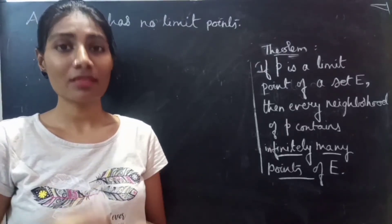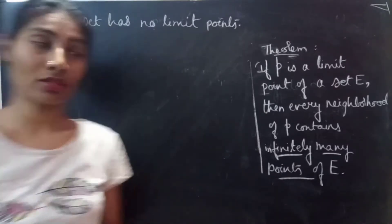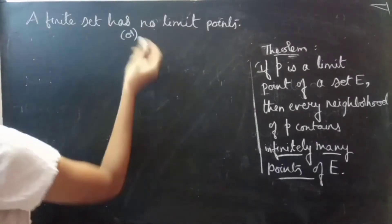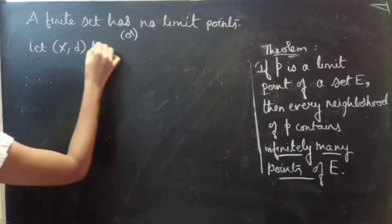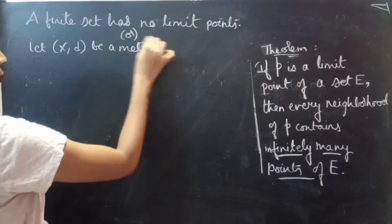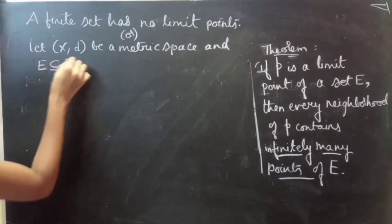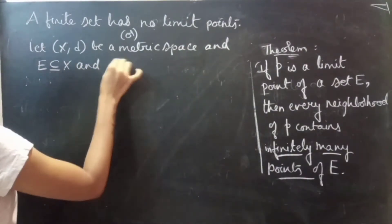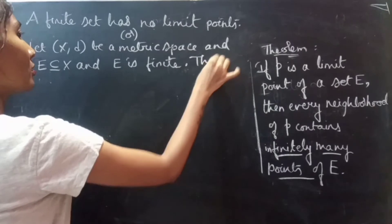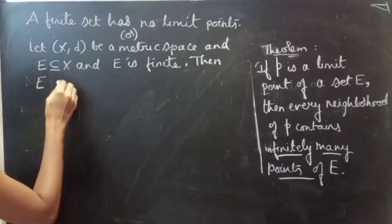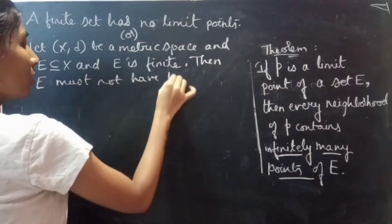Hello everyone, this is your company. In this video we are going to prove an important statement: a finite set has no limit points. The statement can also be written as: let (X, d) be a metric space and E is a subset of X, and E is finite, then E must not have limit points.